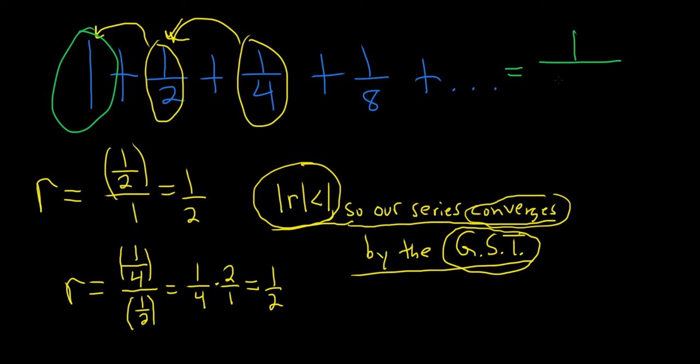Then you always just divide by 1 minus r. So 1 minus 1 half. This is equal to 1 over... So 1 is really 2 halves. So 2 halves minus 1 half. This is 1 over 1 half. And 1 over 1 half is 1 times 2 over 1, which is equal to 2.